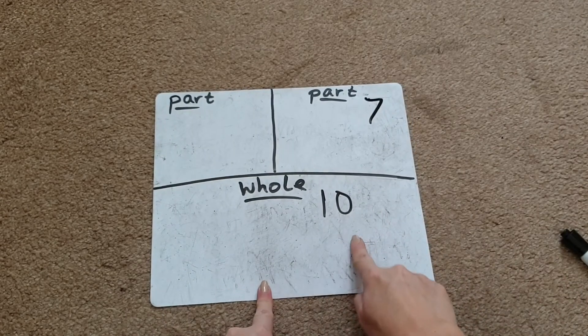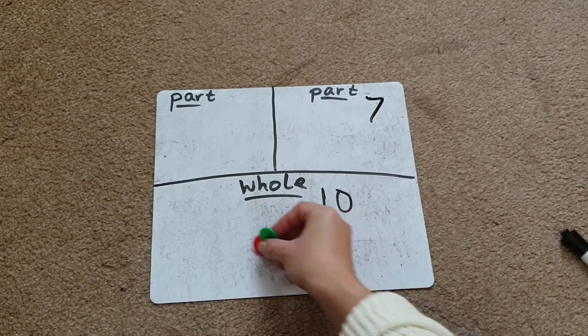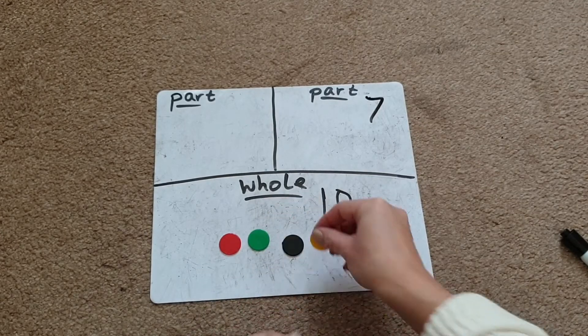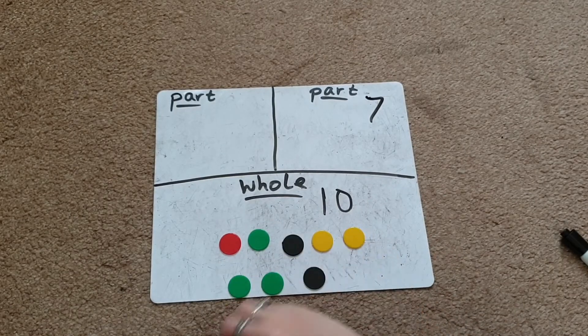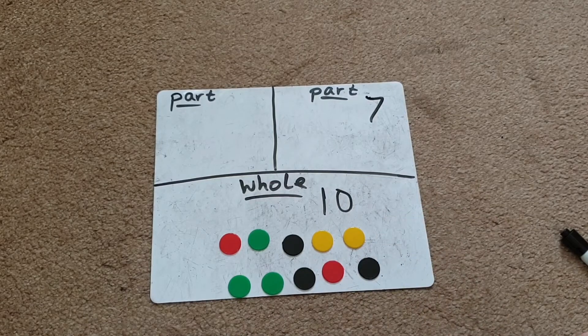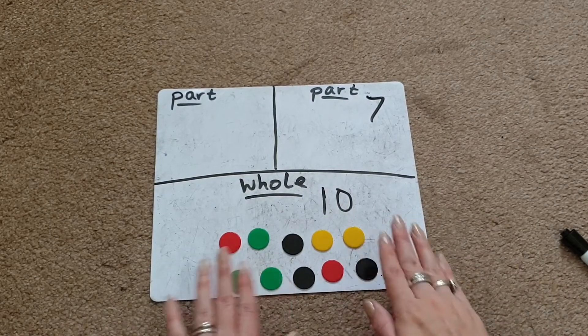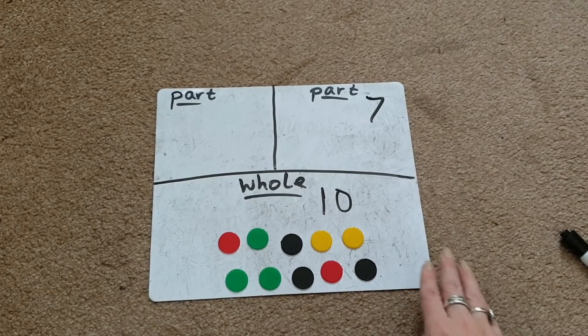Ask the children to count out the whole part first. Count out 10 objects at the bottom. You could use counters, cubes, any types of loose parts you like, anything you can find around your classroom or house. So now we've got 10 objects at the bottom. We've got our whole part.